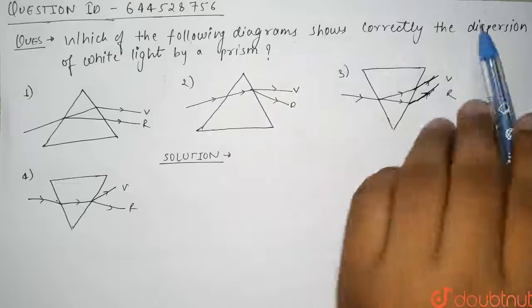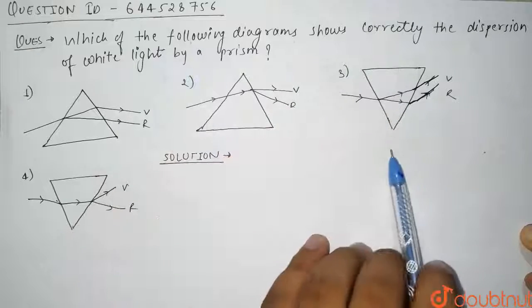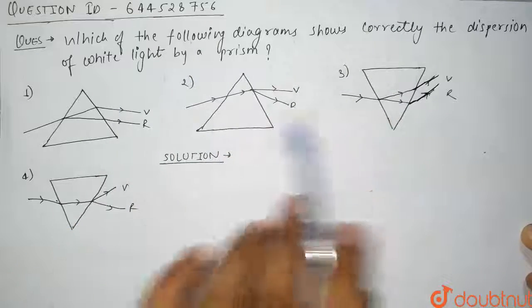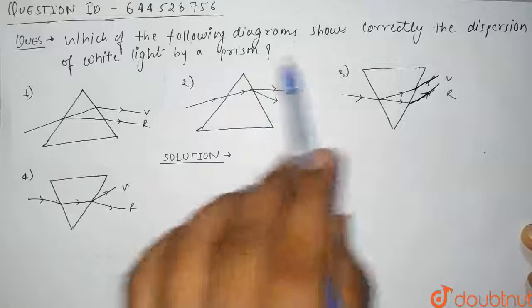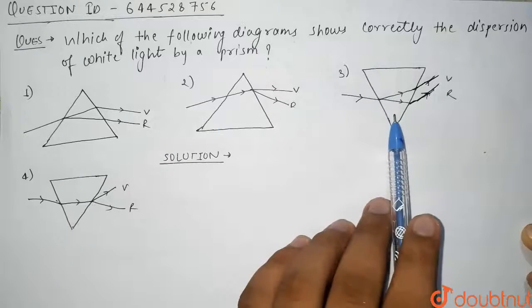Which of the following diagrams correctly shows the dispersion of white light by a prism? So in this question we have been given four prism diagrams and in this prism the dispersion of white light is taking place, and we have to tell which of them is correct.